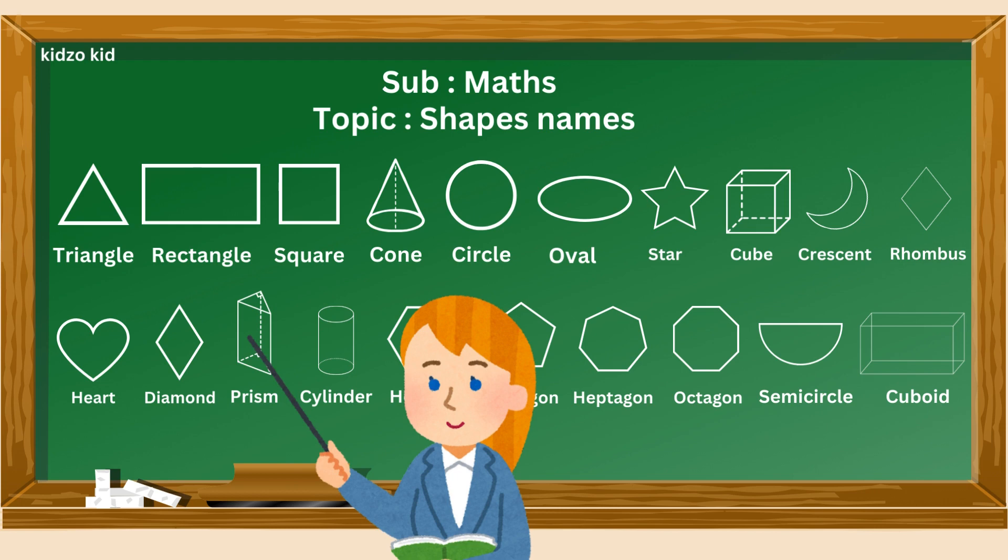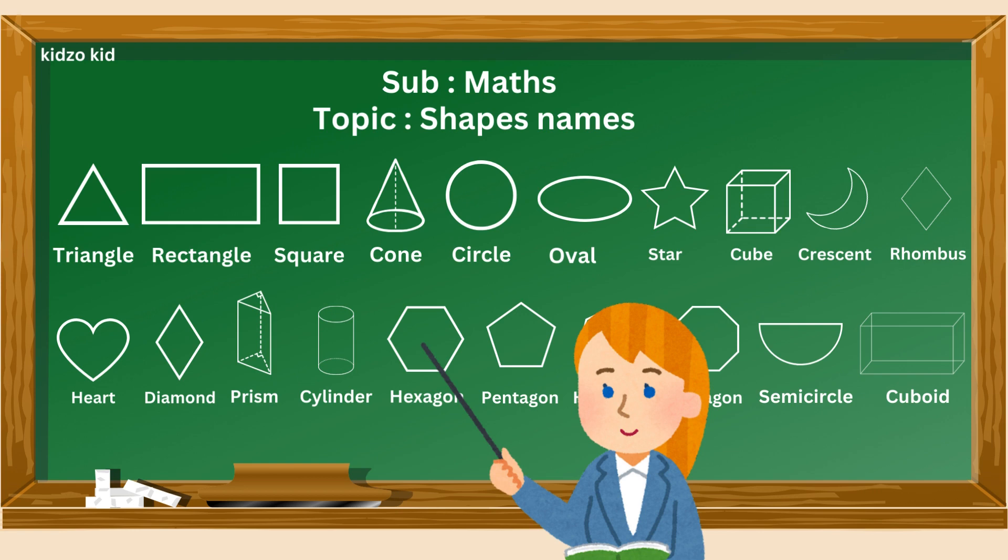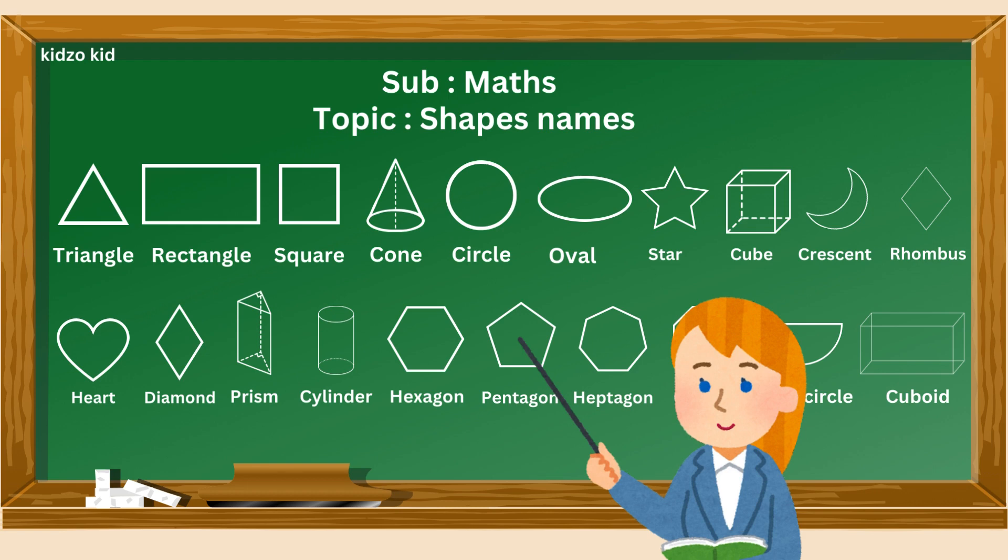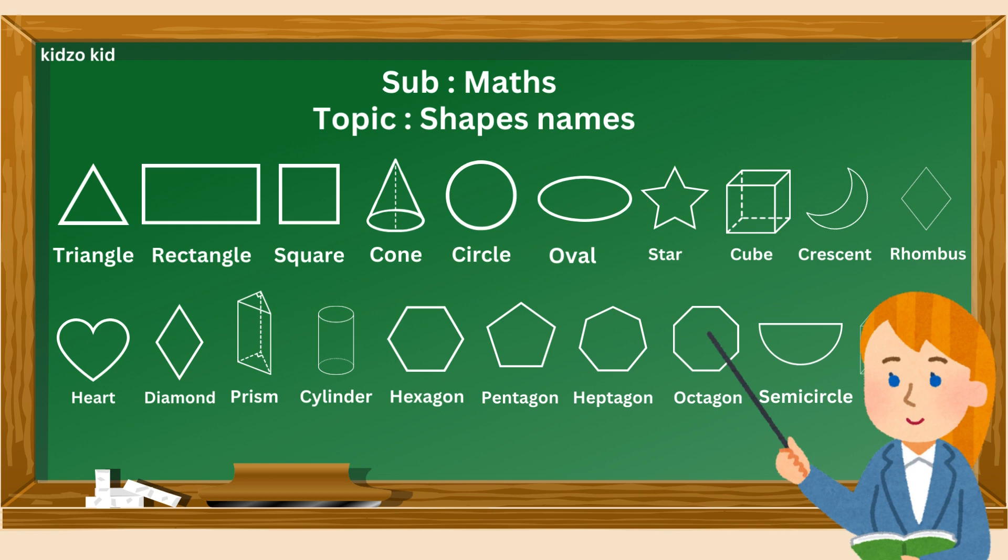P R I S M Prism. C Y L I N D E R Cylinder. H E X A G O N Hexagon. P E N T A G O N Pentagon. H E P T A G O N Heptagon. O C T A G O N Octagon.